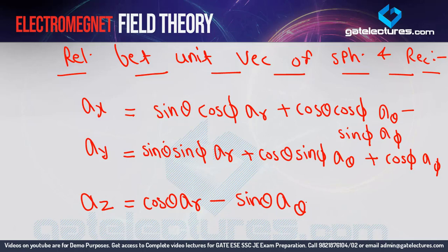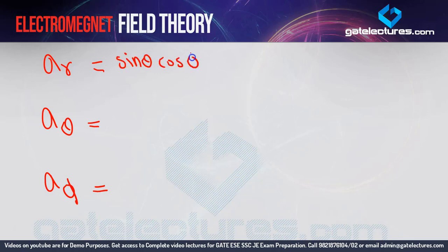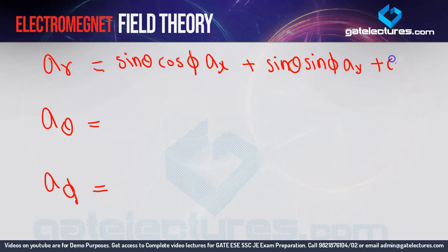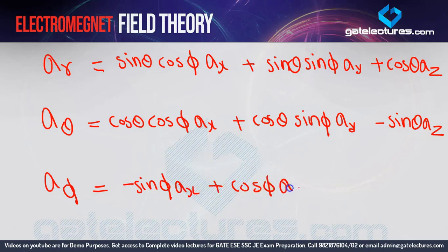You don't need to memorize these individually. The spherical unit vectors in terms of rectangular are: ar = sin θ cos φ · ax + sin θ sin φ · ay + cos θ · az. aθ = cos θ cos φ · ax + cos θ sin φ · ay − sin θ · az. aφ = −sin φ · ax + cos φ · ay. The coefficients are exactly the same between unit vectors and the component relationships — no separate memorization needed.